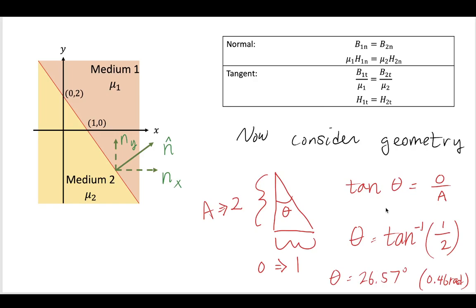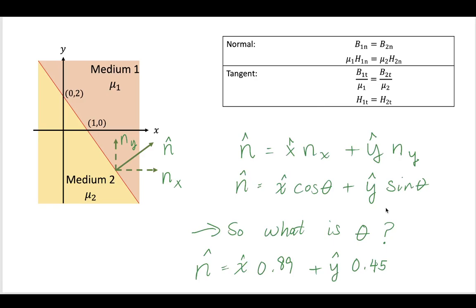we can see that the angle is going to be 26.57 degrees. And we're going to use degrees since we're engineers, but if you did this in radians, you'll get 0.46.